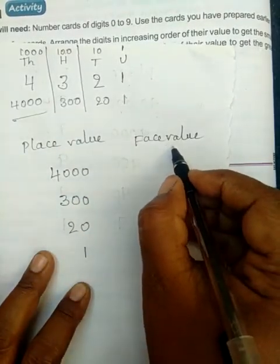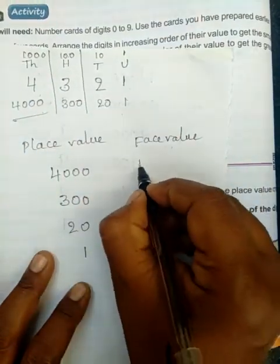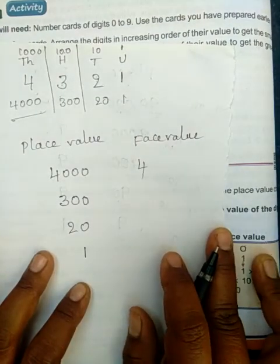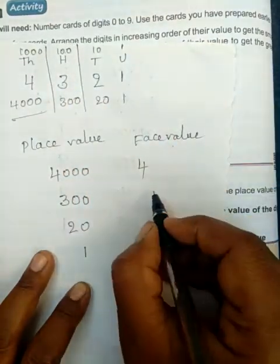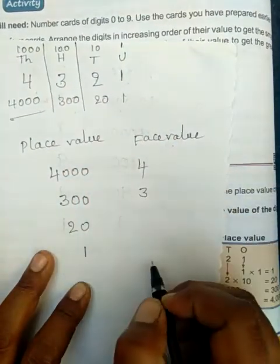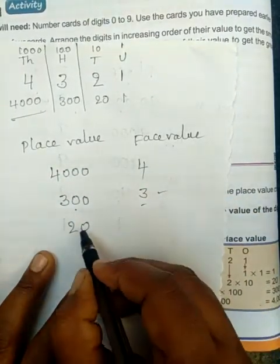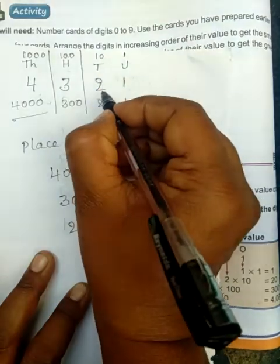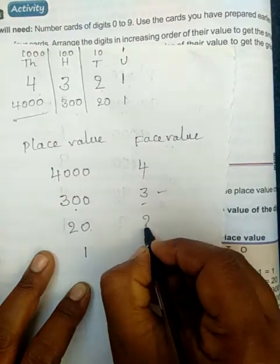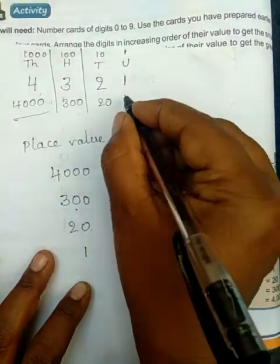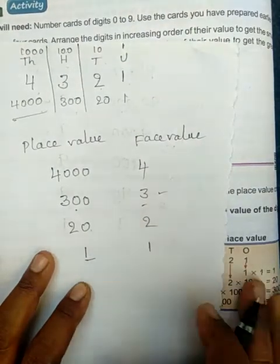Now, how do we find face value? 4 is in the thousands place, but the face value of 4 is 4 only. 3 is in the hundreds place, but the face value of 3 is 3 only — place value is 300, but face value is 3. 2 is in the tens place, place value is 20, but face value of 2 is 2 only. 1 is in the ones place — place value of 1 is 1, and face value of 1 is also 1.